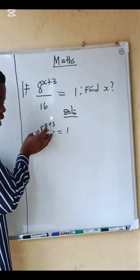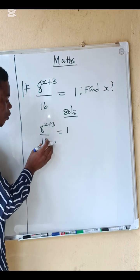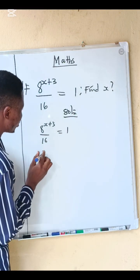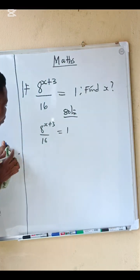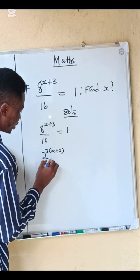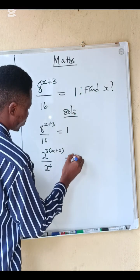What are we going to do? Remember you can reduce it. 8 is 2 power 3, you can reduce 16 to 2 power 4. We are going to have 2 power 3 into x plus 3 divided by 2 power 4 equals to 1.